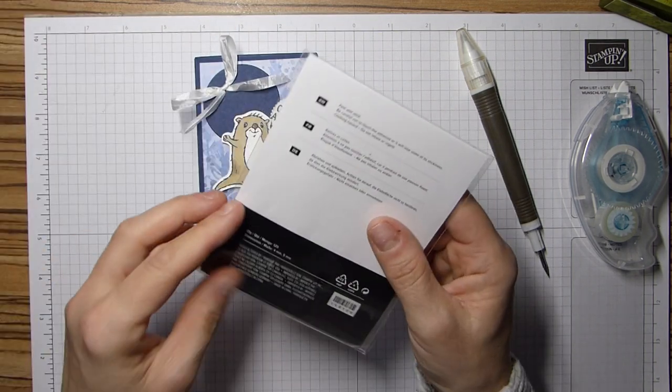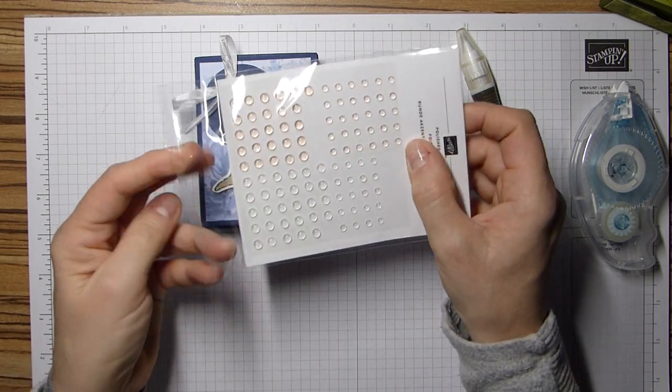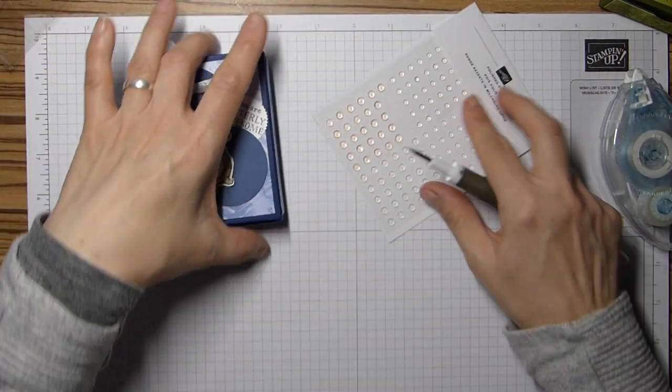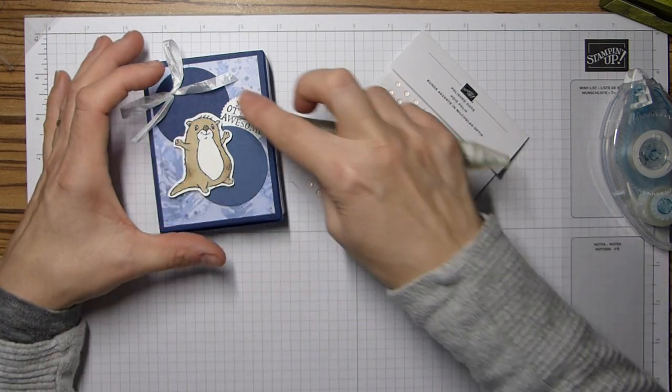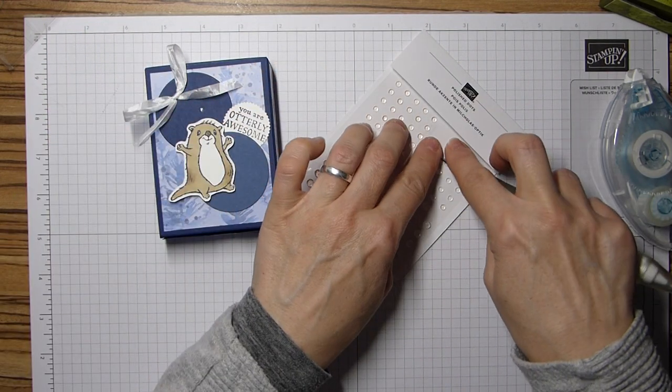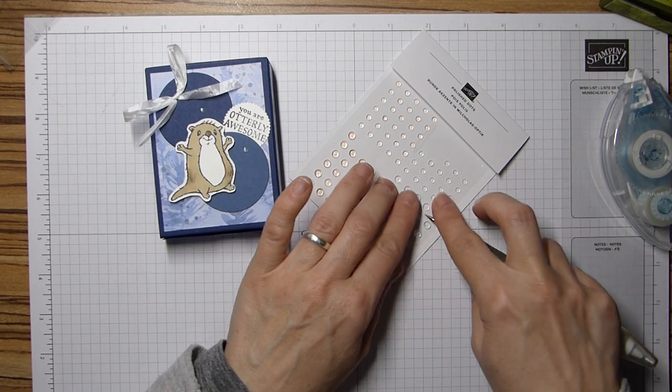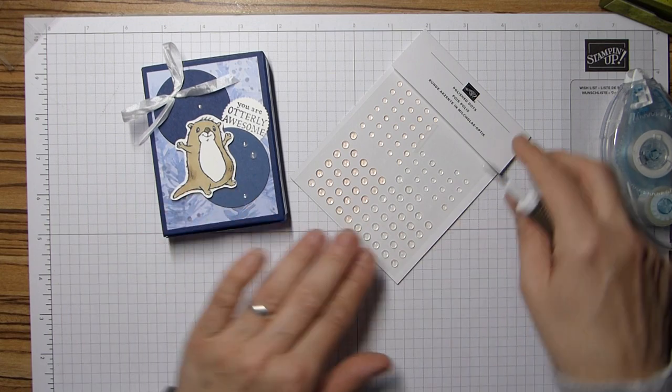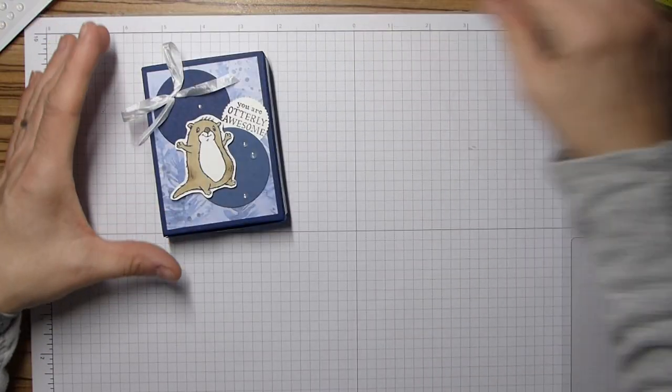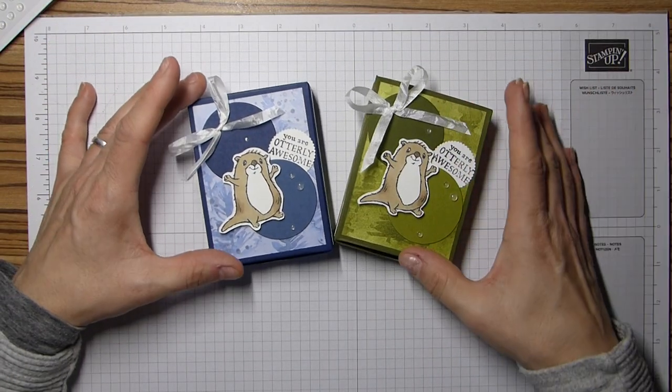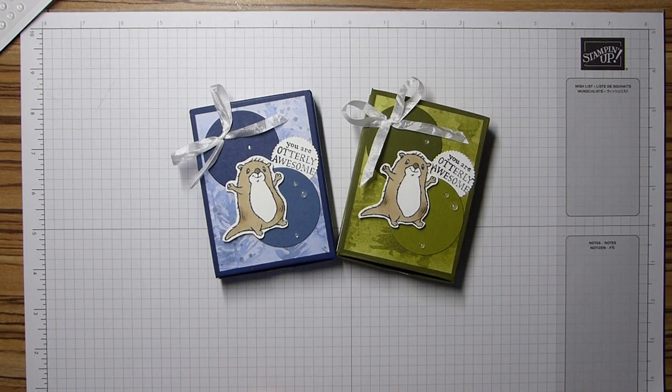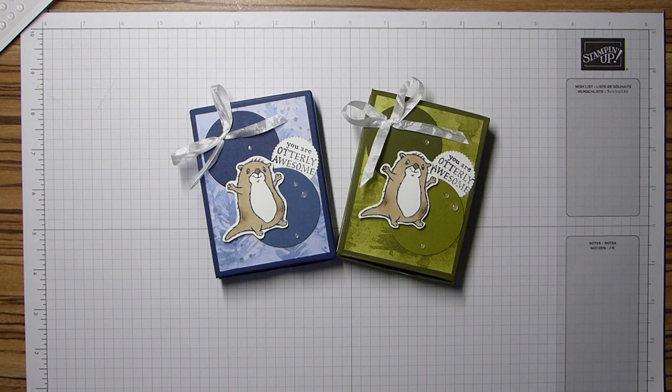And then just to finish off I added some of the beautiful polished dots, just the clear ones, just to add some, well, as I always say you have to add a little bit of bling everywhere one way or another and there you have it. There are my beauty of the otters box. Thanks for joining me I'll see you all again soon. Bye.